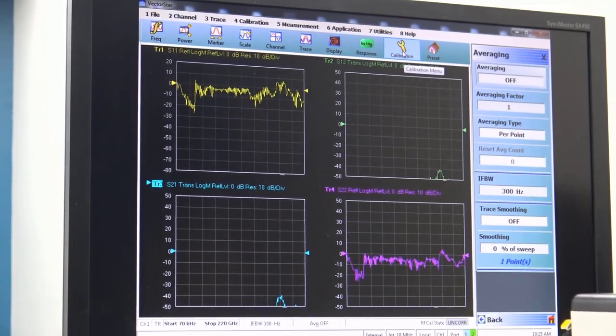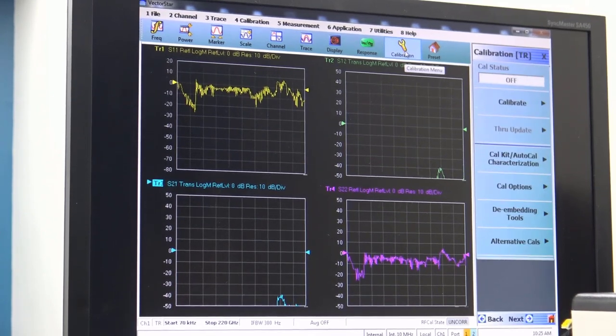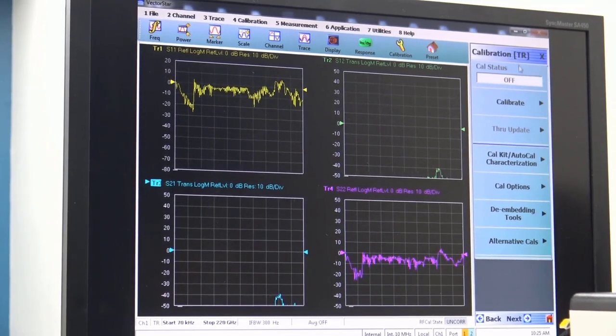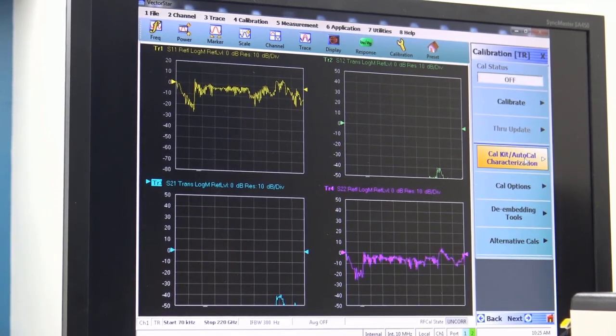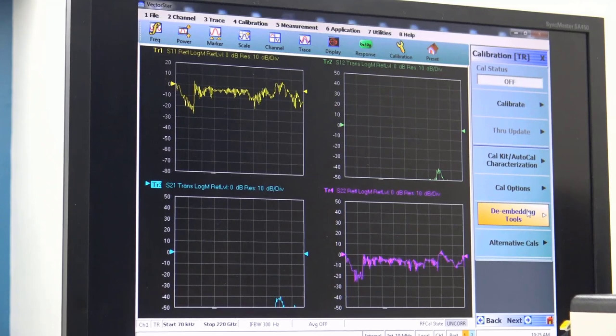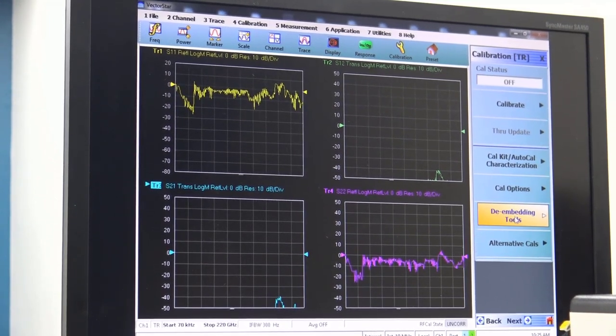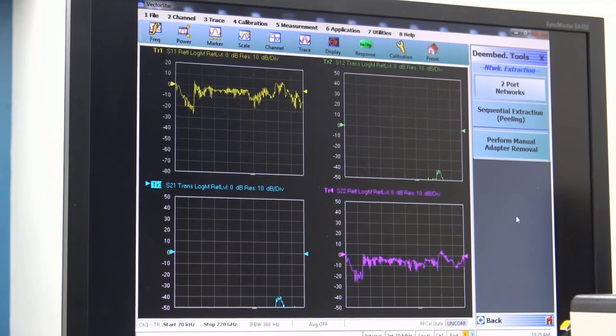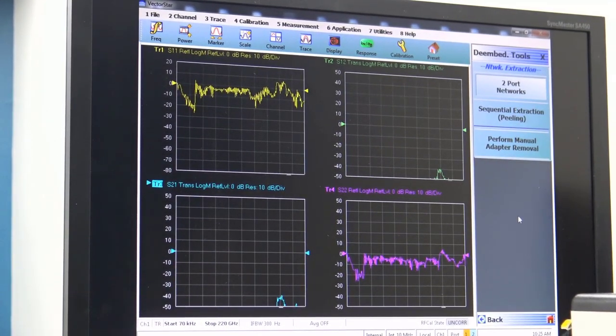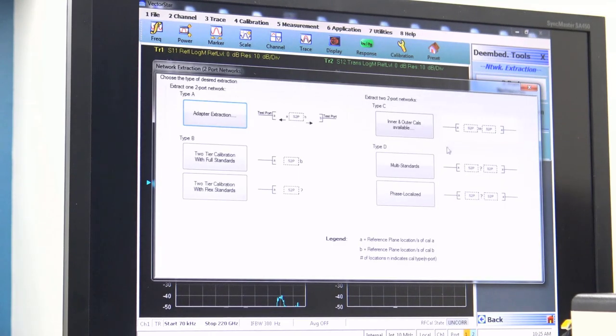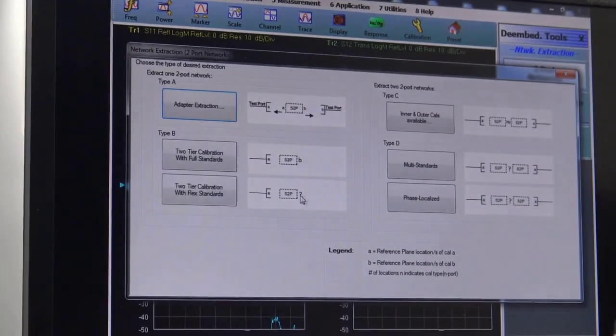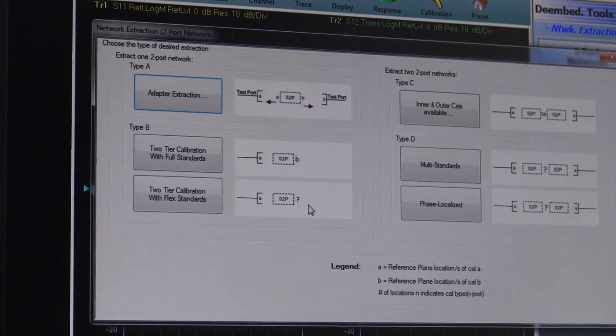Next we'll go to calibration and start setting up for that. In our calibration menu, we can go straight to calibrate. There are other options here that sometimes you might want to take advantage of. For instance, de-embedding tools. If you have fixtures that you may want to de-embed during this whole measurement process, we have a wide range of network de-embedding tools.